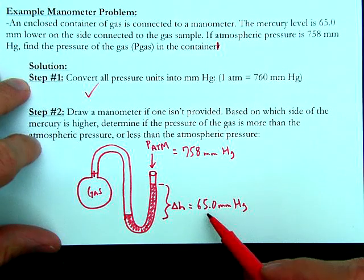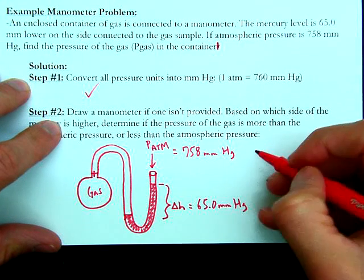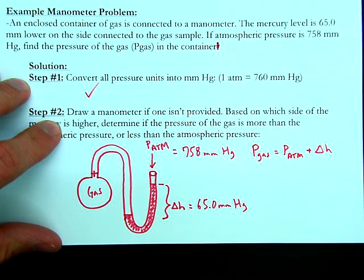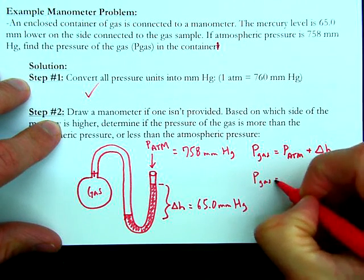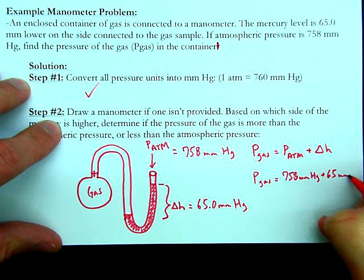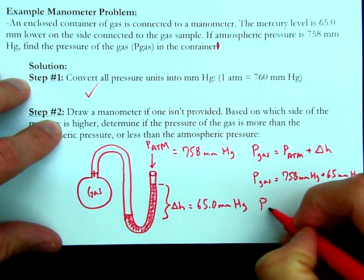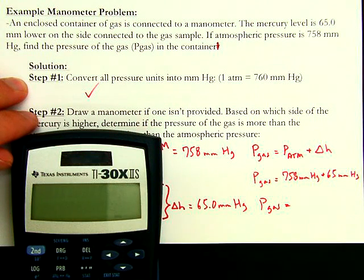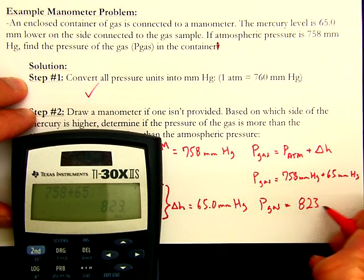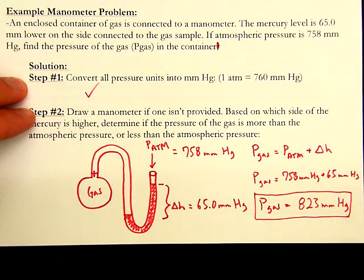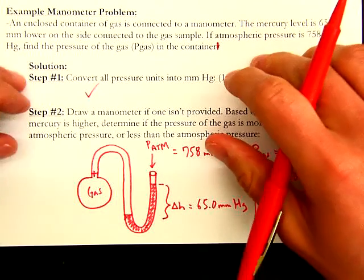Since the gas pressure is more than atmospheric, it will be more than 758 mmHg — specifically, delta H more. Writing the equation: P_gas equals P_atm plus delta H. Plugging in numbers: P_gas equals 758 mmHg plus 65 mmHg, which gives 823 mmHg. As anticipated, the pressure of the gas is greater than atmospheric pressure.